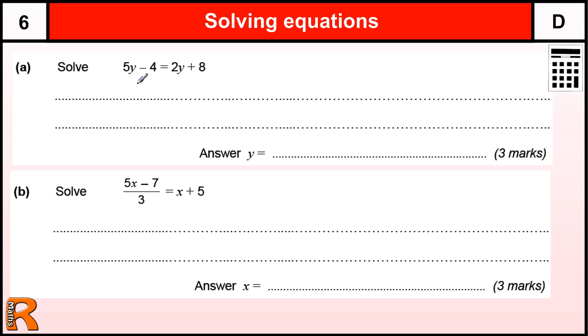What makes this a grade D level 6 question is the fact that it has an unknown on both sides. So our first step is to remove one of those unknowns.